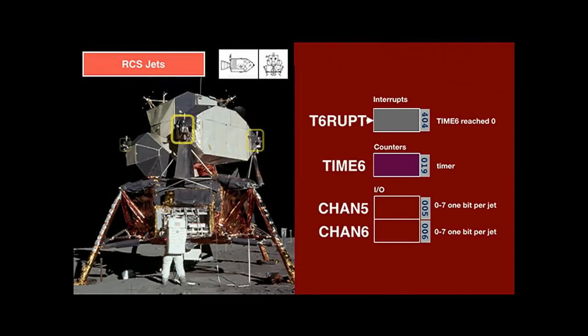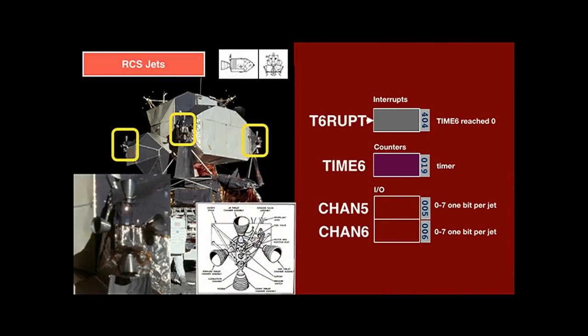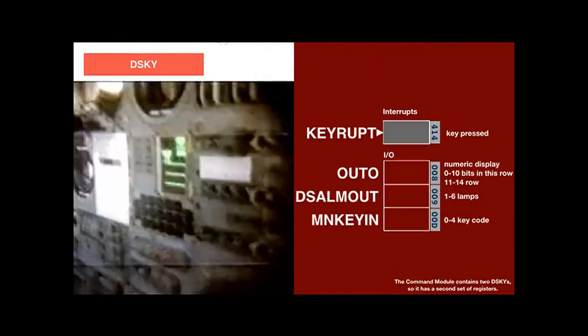The lunar module's rendezvous radar measures the distance of the command and service module during rendezvous. After setting the two angles in the CDUT and CDUS counters to point it towards the other spacecraft, it will automatically track it and cause radar interrupts when new data is available, which can be read from the R-in-red counters. The command module, service module, and lunar module all contain reaction control system (RCS) jets that emit small bursts for holding or changing attitude. On the lunar module, there is one bit for each of the 16 jets — setting a bit to one will make the jet fire. The system software uses a dedicated timer, time six, and its interrupt T6-rupt, for timing the pulses.